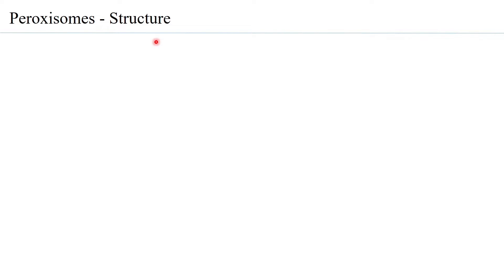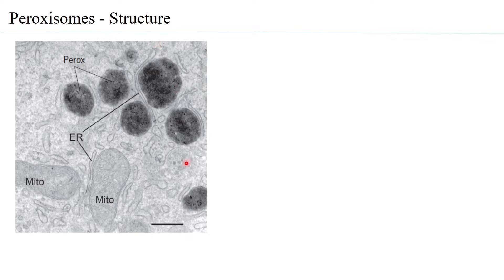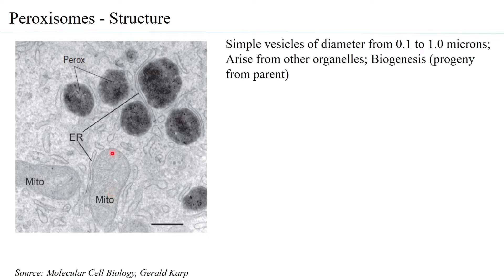Let us look at the structure of peroxisomes, which is very simple. As you can see in this electron microscope picture, peroxisomes are microbodies just like vesicles, and they are associated very closely with the endoplasmic reticulum and the mitochondria. In fact, peroxisomes are to a great extent functionally associated with mitochondria, because there are several metabolic pathways that happen similarly in both organelles.